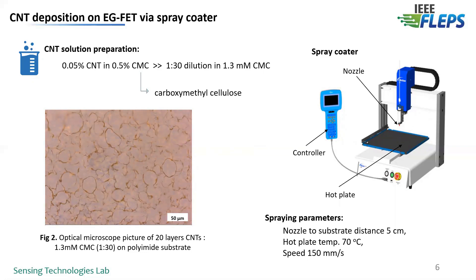In order to have a high quality film, we optimized several parameters of the spray coater, such as the nozzle-to-substrate distance, the hot plate temperature, and the speed of spraying. In figure 2, you can see an optical microscope picture of the thin film spray-coated on the polyimide substrate.